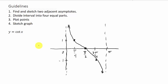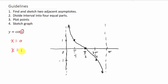The first thing we need to do is look at some guidelines. The first thing we do is find and sketch two adjacent asymptotes. For cotangent, regular cotangent x is undefined at 0 and pi — those are the two vertical asymptotes. To find the asymptotes, you take whatever you're taking the cotangent of, set that equal to 0, and set that equal to pi, then solve for x.